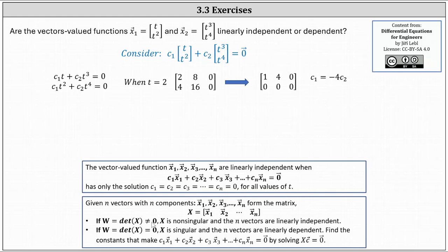If the determinant doesn't equal zero, then the n vectors or vector-valued functions are linearly independent. If the determinant of X equals zero, then the n vectors or n vector-valued functions are linearly dependent.